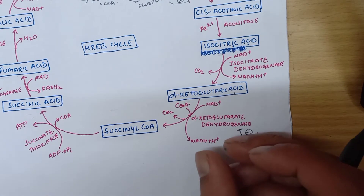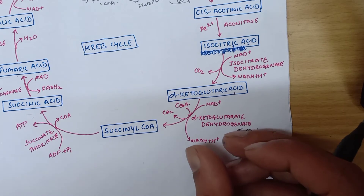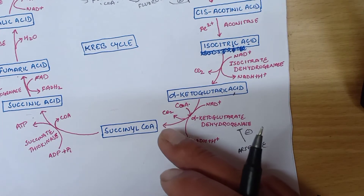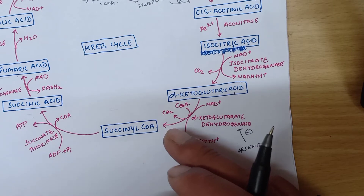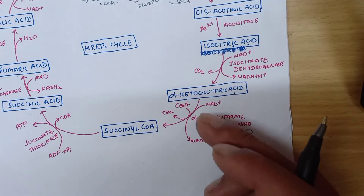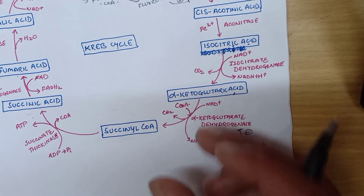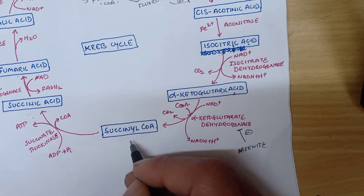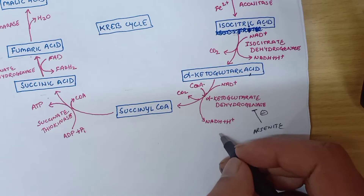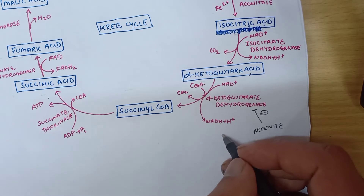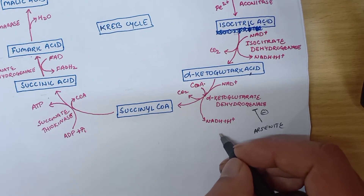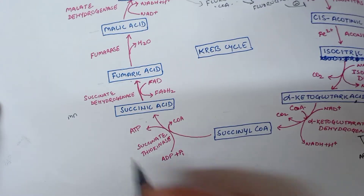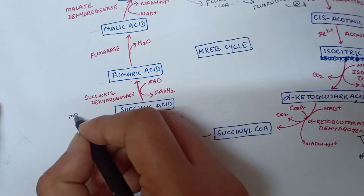Arsenite also forms a stable complex with the thiol group of lipoic acid, making it unavailable to serve as a coenzyme, so succinyl coenzyme A will not be formed.